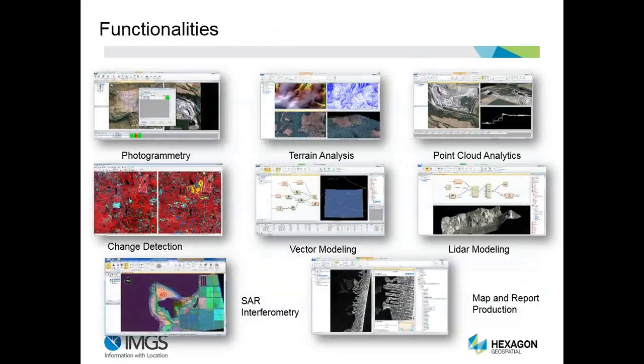Some of the functionalities that Imagine provides include a photogrammetry tool set and the ability to do terrain analysis. In the last couple of years, it now provides very powerful point cloud analytic tools. With the 2015 release, we've enhanced the change detection workflows built into Imagine. You can also do vector modeling now, using some of the GeoMedia components and pipe tools. It's built into Spatial Modeler, and you can do LiDAR modeling as well as SAR interferometry if you want to work with radar-type data or satellite information. You can then produce maps and reports out of all that information.